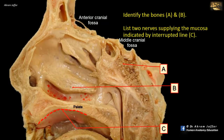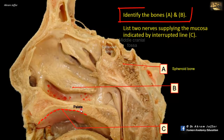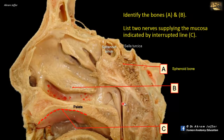Identify the bones A and B. This is a mid-sagittal section showing part of the nose, palate, mouth, and this is part of the floor of the anterior and middle cranial fossa.